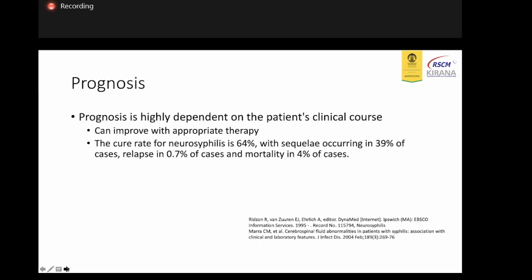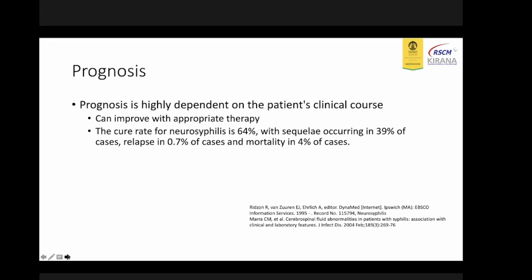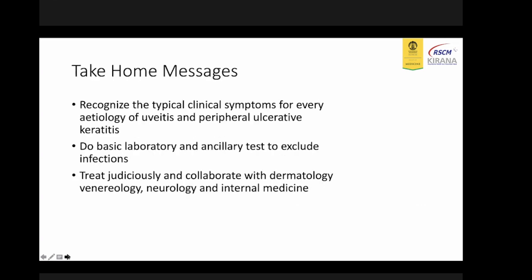In our cases, the first patient's visual acuity improved well. The second patient still had a pale optic nerve head. The third patient had peripheral ulcerative keratitis. But after treatment and surgery, visual acuity improved in all three patients.